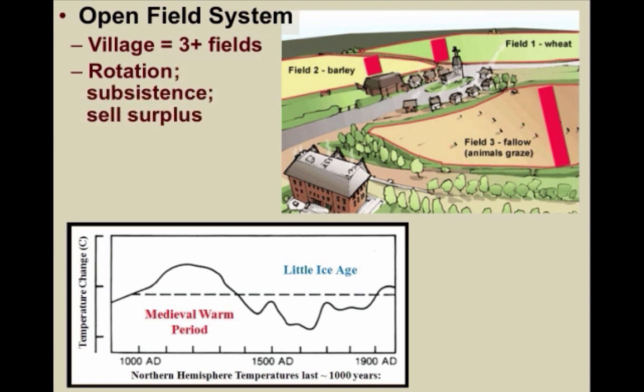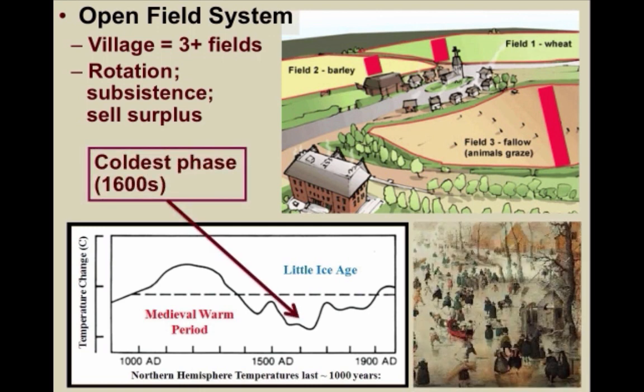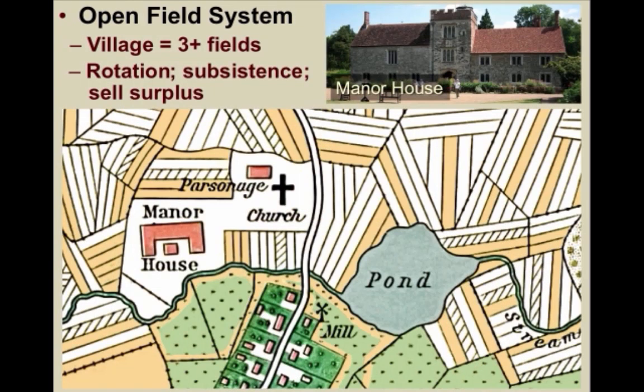These tenant farmers, or peasants, were also subsistence farmers, growing just enough food to survive and selling any surplus at the market for a meager profit. This system largely prevailed unchanged for centuries until the Little Ice Age hit, and especially during the coldest period during the 1600s. This basic map shows how the different plots of land would have been divided amongst the farmers.